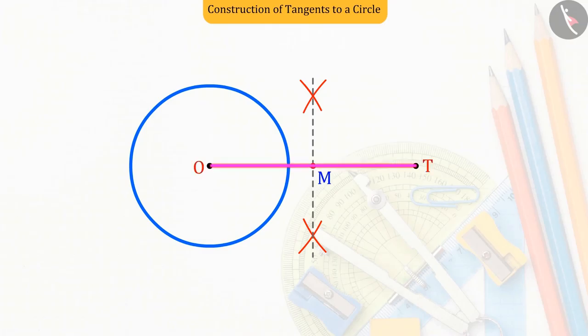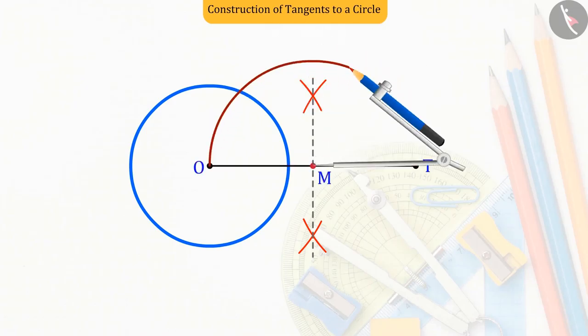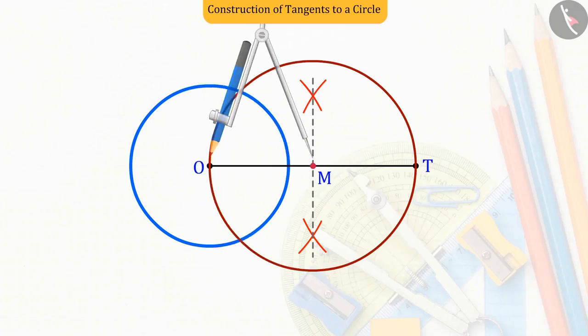Which divides the line segment OT into two equal parts OM and MT. The point M is the center and taking OM and MT as radius, let us draw a circle which intersects the given circle at points P and Q.